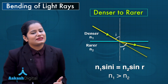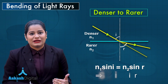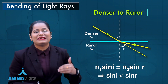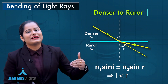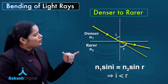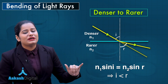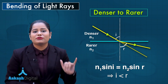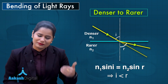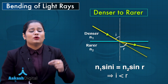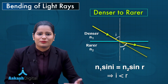Since n1 is greater than n2, to hold Snell's law, sin i must be less than sin r — that is, the angle of incidence must be less than the angle of refraction. The angle of refraction will be more than the angle of incidence only if the light bends away from the normal when it enters the rarer medium. This is the reason why light going from denser to rarer medium bends away from the normal.